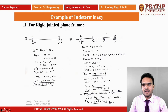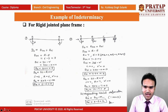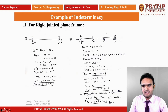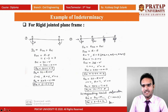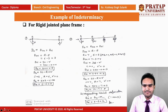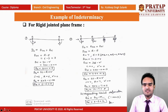Now we calculate the internal static indeterminacy DSI. The formula is 3C minus R-dash, where C is the number of loops in the structure. In this structure, no loops are available, so C equals 0. R-dash is related to hinges — no hinges are available, so R-dash equals 0. Putting values in the formula: DSI equals 3 times 0 minus 0, which equals 0. Total DS equals 3 plus 0, which equals 3. This beam is statically indeterminate by 3 degrees.